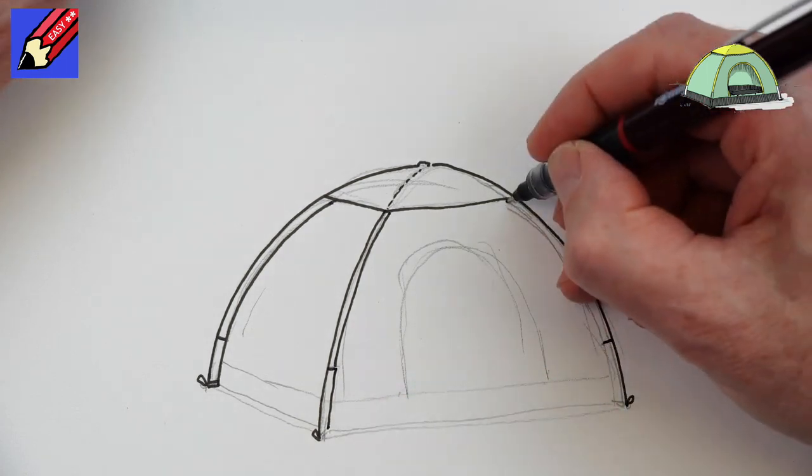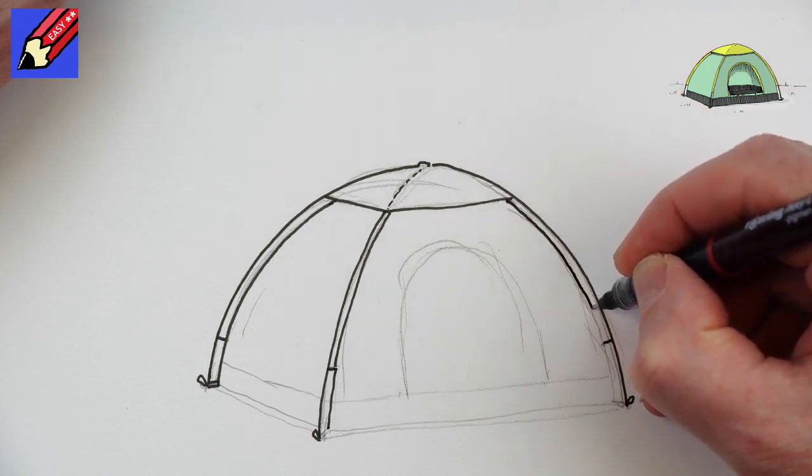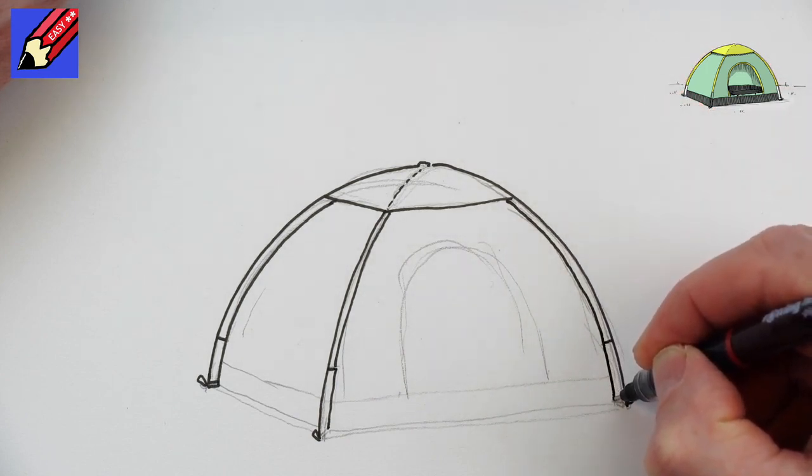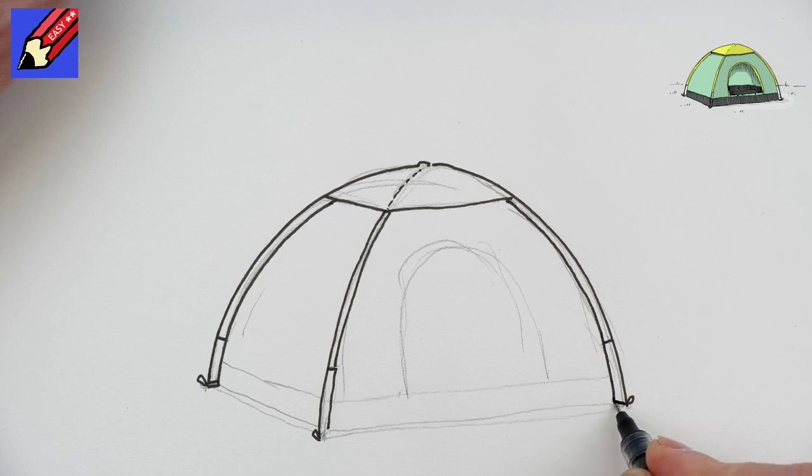This is Draw Stuff Real Easy, but it's a complicated thing, so I'm trying to make it as easy as possible. We have those little ties which hold it down to the pegs.